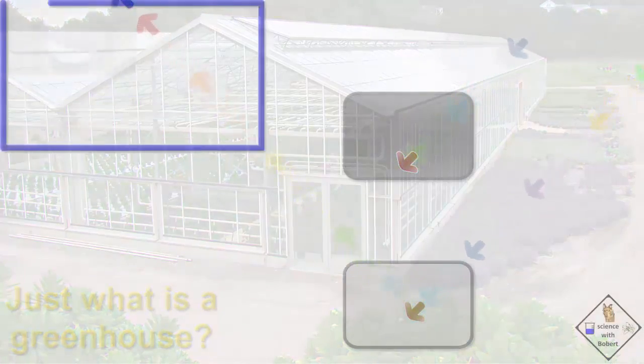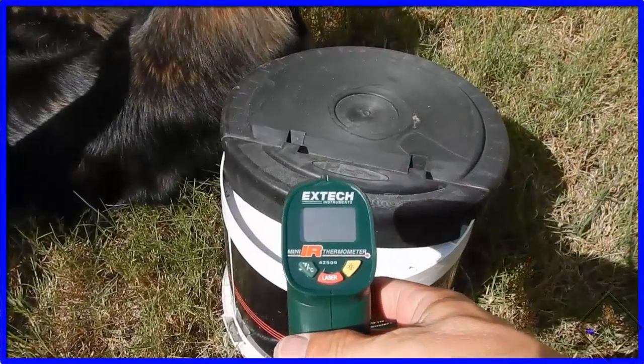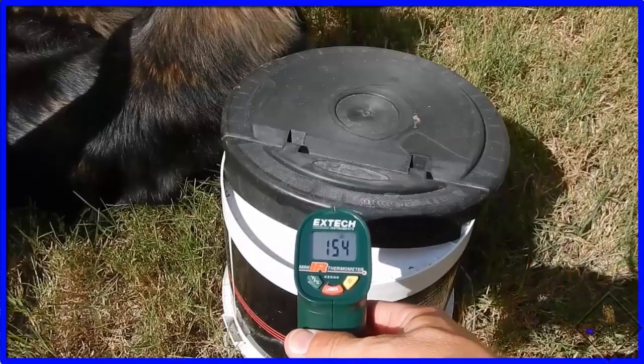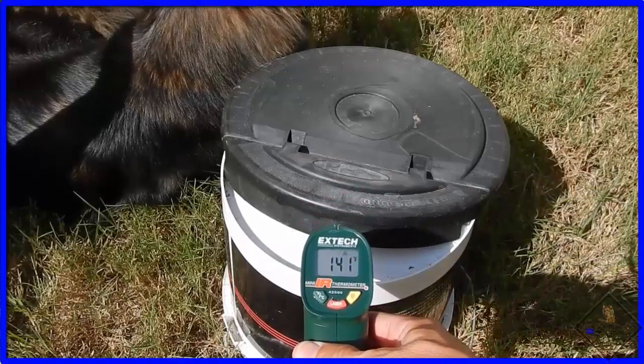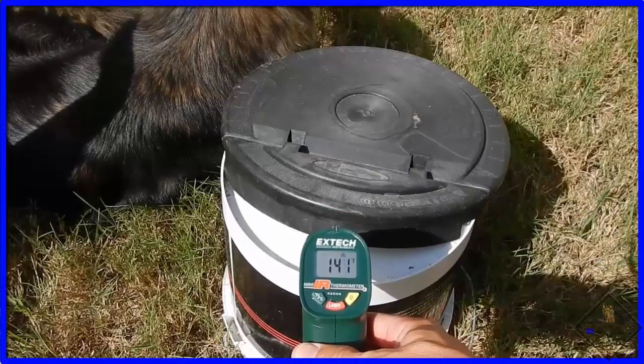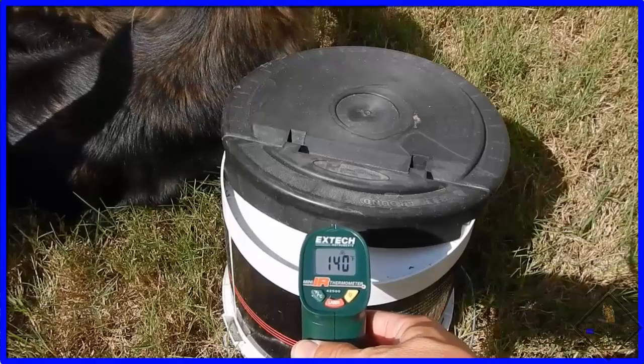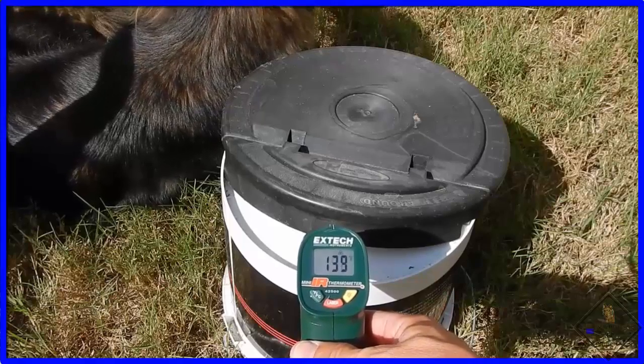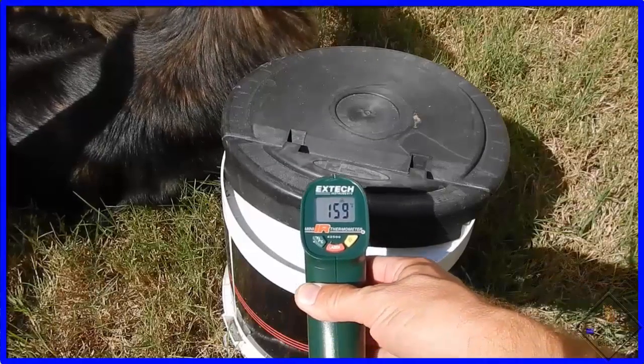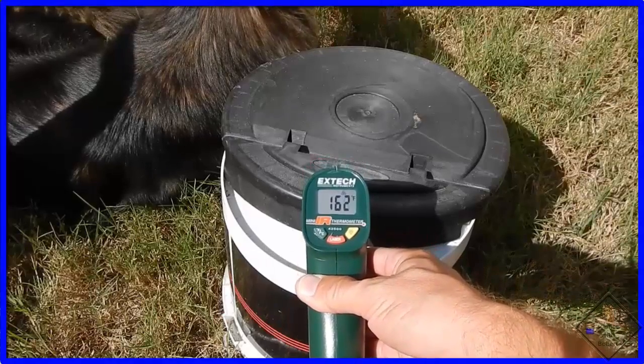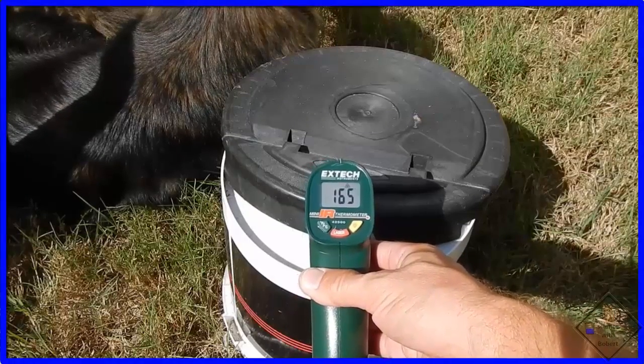This can be seen with Dr. Smith's infrared thermometer. These two objects have been out in the sun. The black one is a lot hotter, as measured by the IR thermometer.